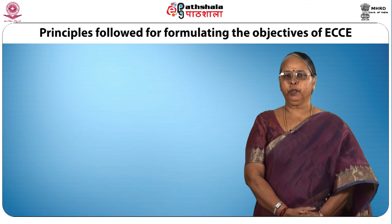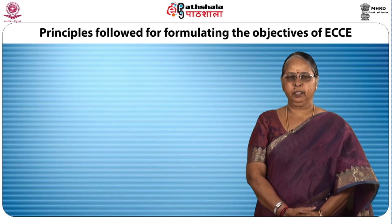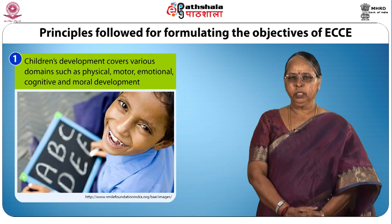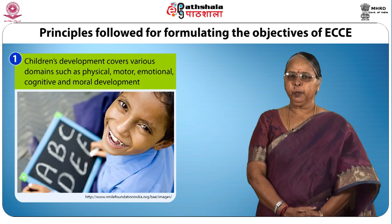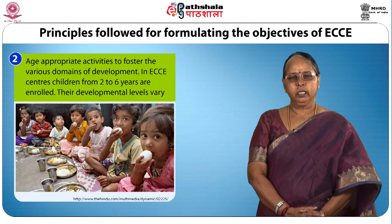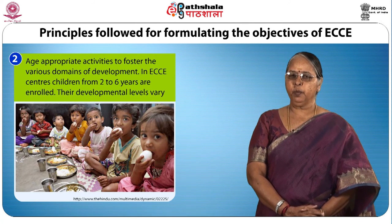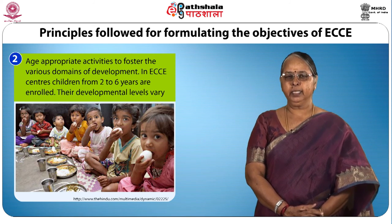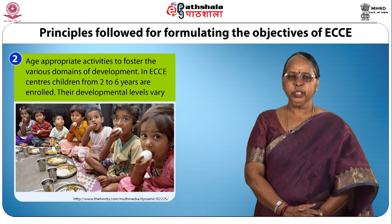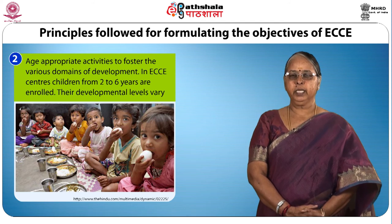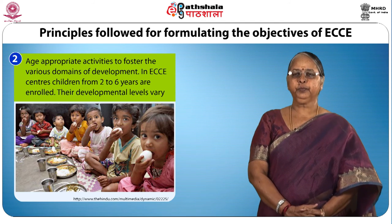You should know the principles followed for formulating the objectives of ECCE. First, children's development covers various domains such as physical, motor, emotional, cognitive and moral development, and the program should be organized to meet the needs of these domains. Second, age-appropriate activities to foster the various domains of development — in ECCE centers children from 2 to 6 years are enrolled, their developmental levels vary, hence the program should be different according to age and developmental level. Grouping is important: 2 to 3 years pre-KG, 3 to 4 years LKG, 4 to 5 and a half years UKG.